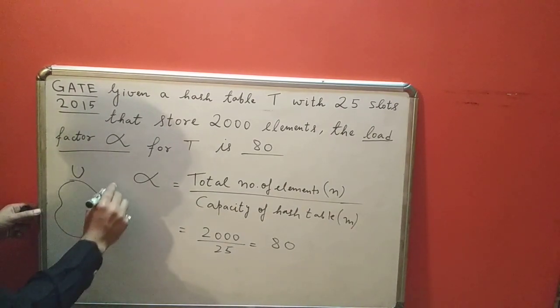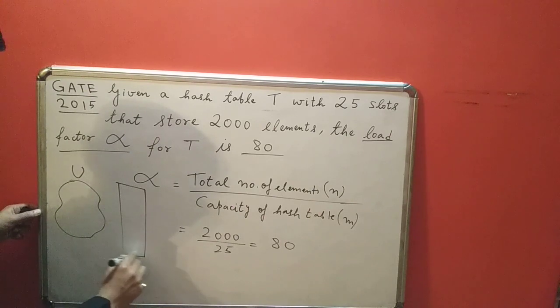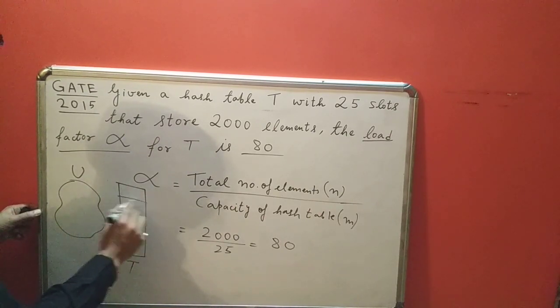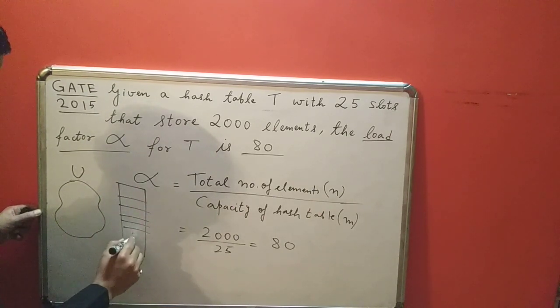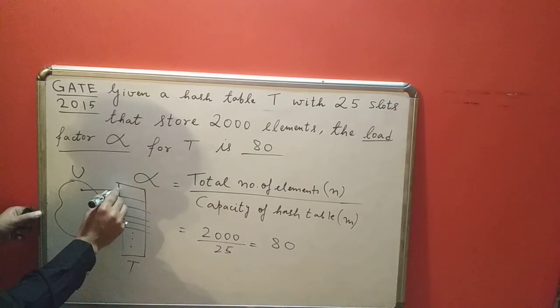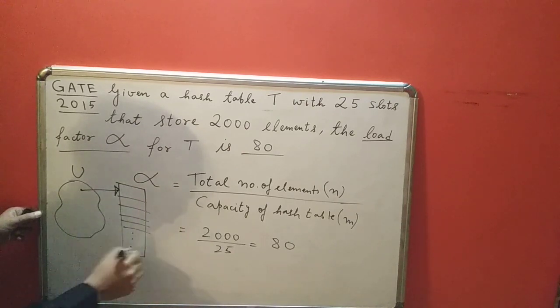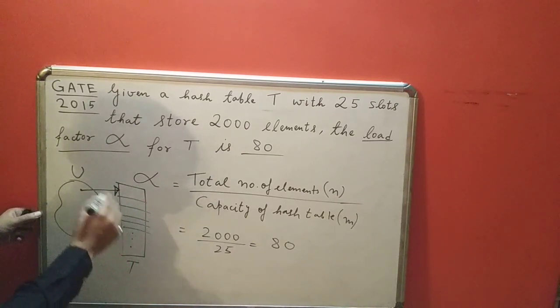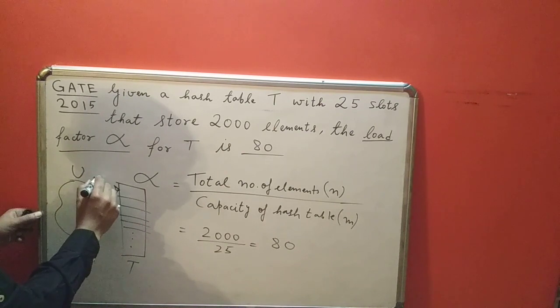The hash table takes elements from this universal set, and this is your hash table T with a number of slots. What it does is it will take elements from the universal set and map it to one of the locations in the hash table.